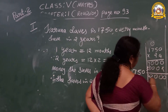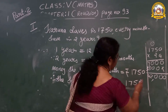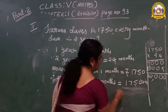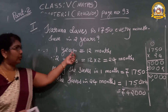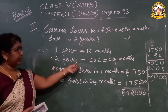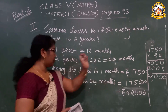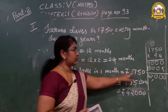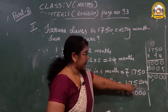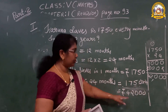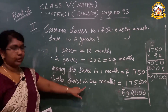Adding the rows gives 42,000. So 1,750 multiplied by 24 = ₹42,000. This is the total she saves in 24 months. One year = 12 months, two years = 24 months. Money she saves in one month is 1,750; therefore she saves in 24 months = 1,750 × 24 = ₹42,000. This is our answer. All the steps you have to write neat and clean.